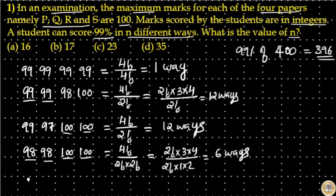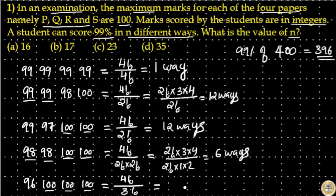If a student scored 96 in one subject and 100 in the other three subjects, that means total elements is 4. So 4 factorial divided by 3 factorial (since 100 is repeated three times), which equals 3 factorial times 4 divided by 3 factorial, and that is equal to 4 ways.